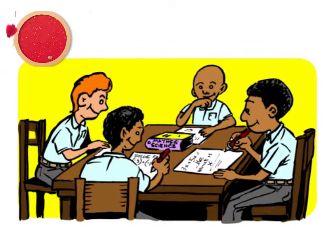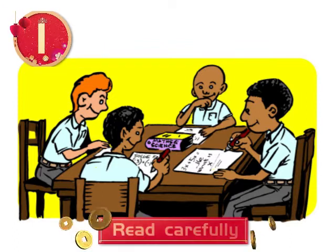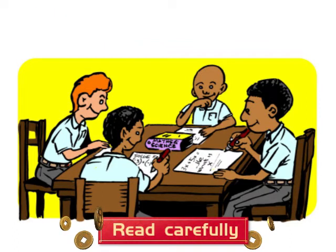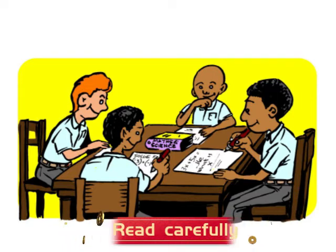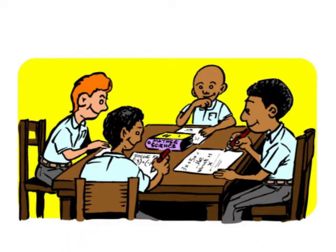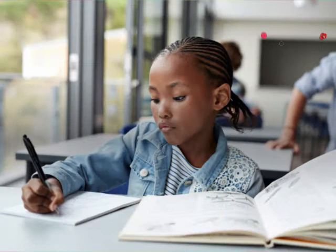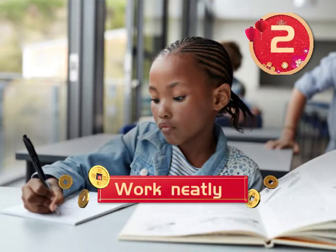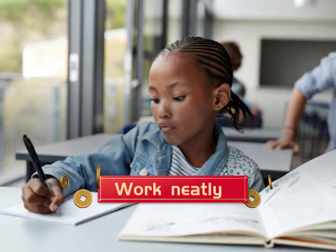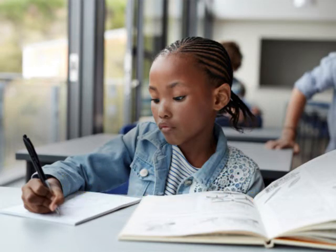The first mistake many learners make is that they do not read the question carefully. Teach your learners to always read their mathematics problems carefully before attempting to solve it. The second mistake many learners make is to scribble their answers down. Teach your learners to always work neatly and write everything out clearly and neatly.